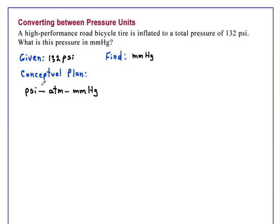So we need two conversion factors, or relationships, A and B. Conversion factor A says that in one atmosphere, we have 14.7 psi.